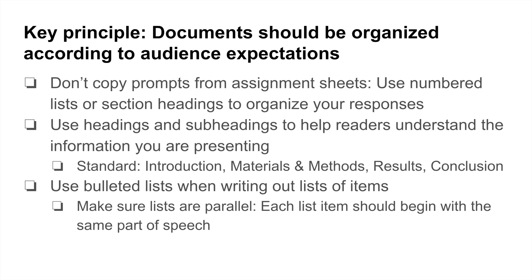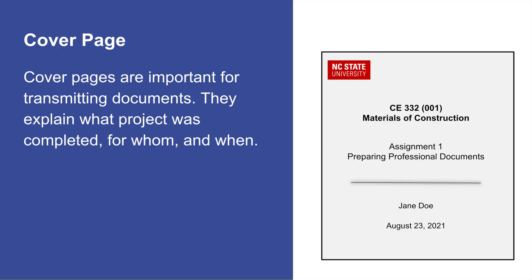Now let's walk through specific elements of some engineering documents you may produce while in CCEE. First, your homework assignments and reports should include a cover page with your name, the course code and section number, the assignment name or number, the date of submission, and if applicable, other necessary information such as the TA's name. You should center the information on the page with the title in the middle and other information at the bottom, as shown on the screen.